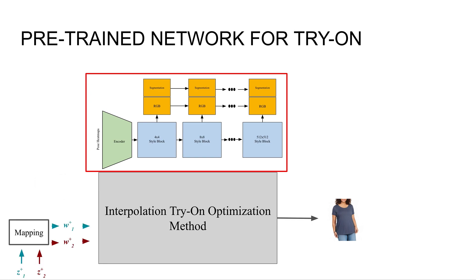The latent representations will look a little different than the previous network. Instead of having one latent vector for all the style blocks, we'll have one latent vector for each style block. And this has been shown in previous works to work better when projecting real images into the latent space.